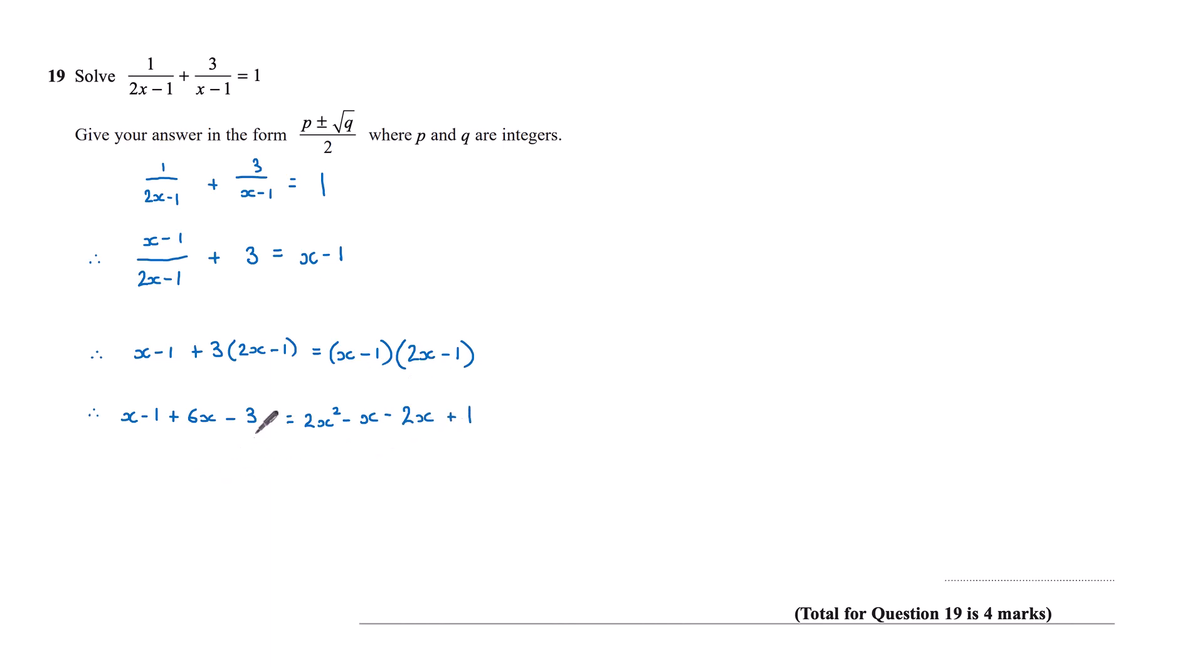Bringing together the terms on each side. On the left-hand side, I've got x plus 6x, that's 7x, minus 1 minus 3 is minus 4. On the right-hand side, I can bring these x's together, so I've got 2x squared minus 3x plus 1.